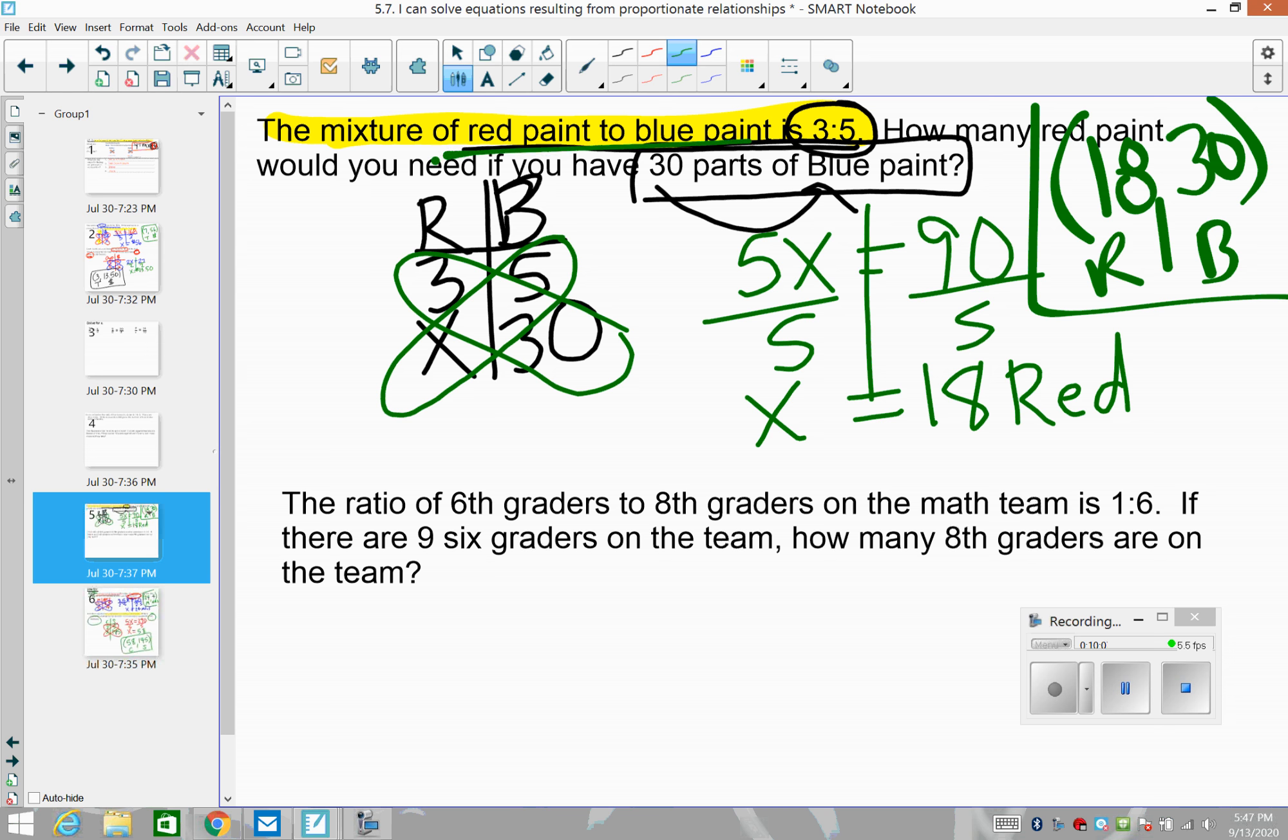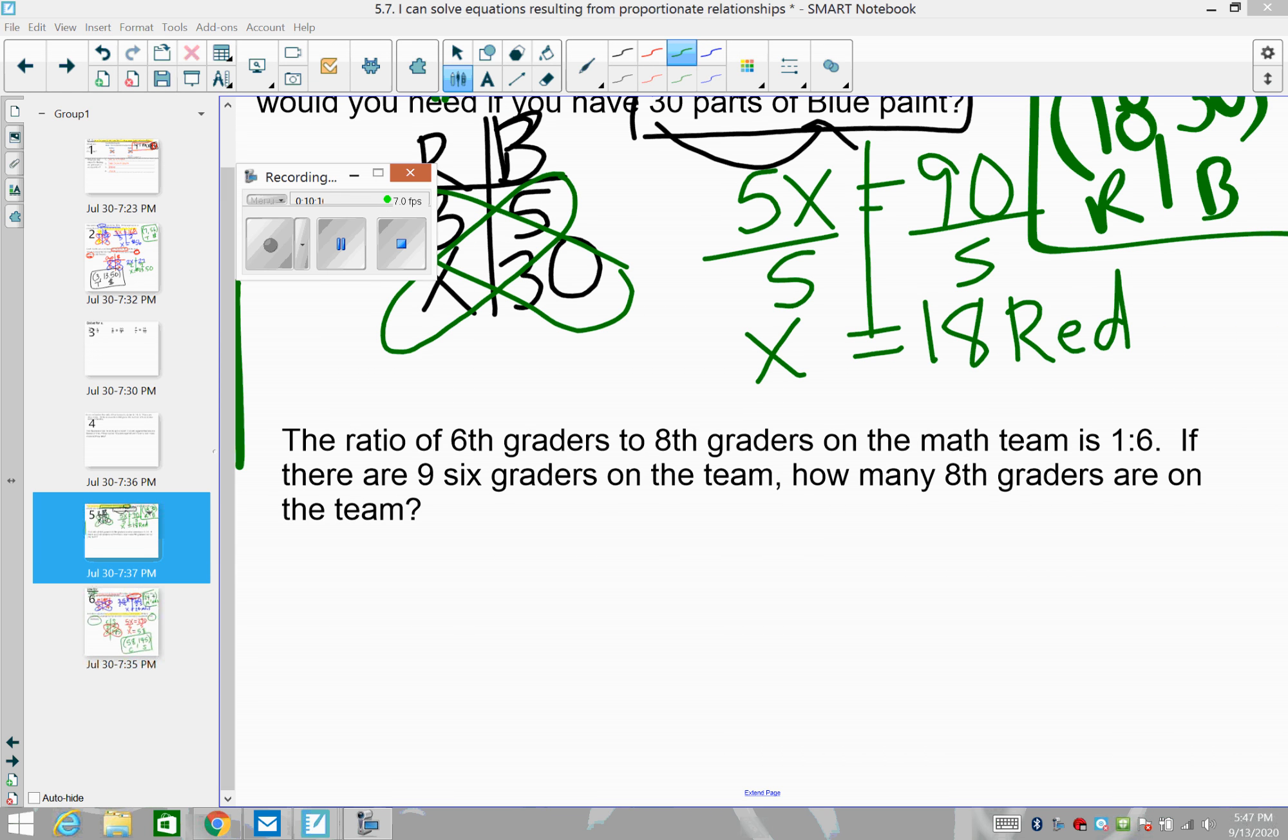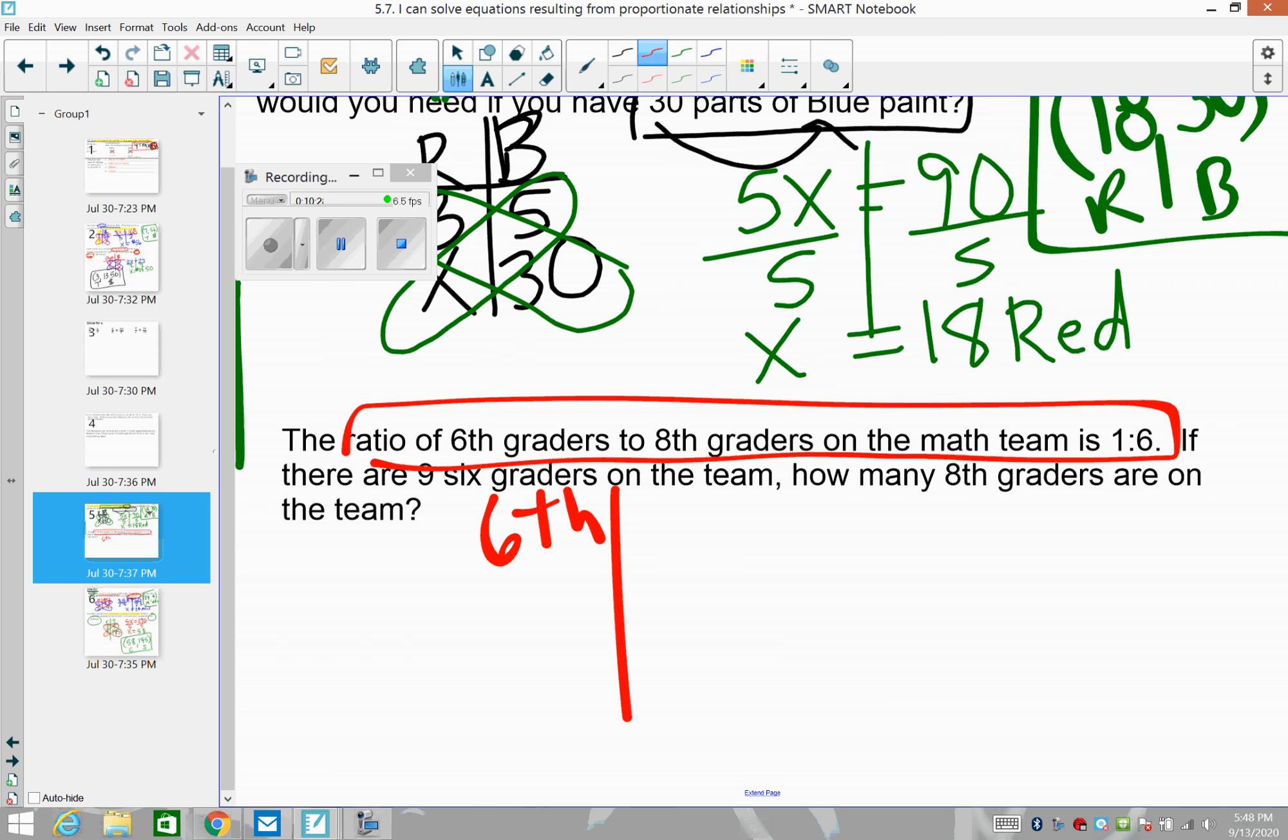Remember that first sentence, we just read it in order. Make sure you're reading it in order. All right, group. So this might be our last problem. We'll see how this one goes. Feel free to pause video, rewind. If you're stuck, the ratio of sixth graders to eighth graders on the math team is one to six. Check that out. So we're comparing the sixth graders and the eighth graders on the math team, which is a ratio of one to six.